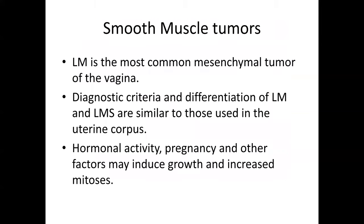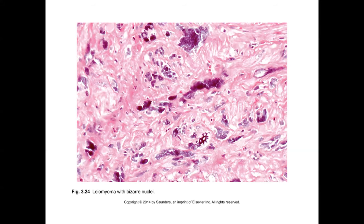Smooth muscle tumors can occur anywhere we have benign smooth muscle, including the vagina. Leiomyoma is the most common mesenchymal tumor, and the usual criteria used elsewhere in the gynecologic tract apply for differentiating from leiomyosarcoma. Leiomyoma with bizarre nuclei is a relatively uncommon type but can occur; it's important to use the term 'bizarre nuclei' rather than 'atypical nuclei' to avoid concern about malignant or premalignant behavior.